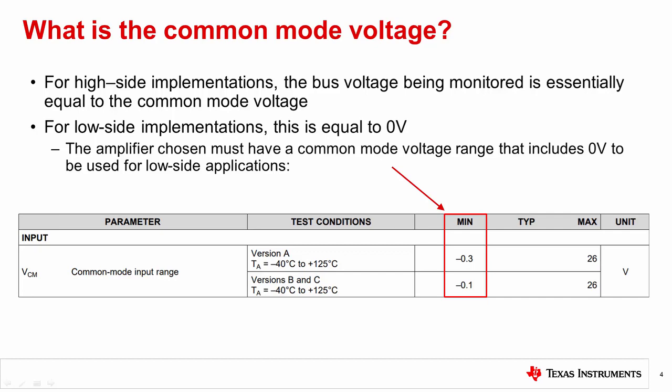For low side measurements, as stated previously, the common mode voltage is essentially zero volts. So you need to choose a device that includes zero in its common mode range. The specs table shown here illustrates a device with a common mode voltage that can go several hundred millivolts below ground.